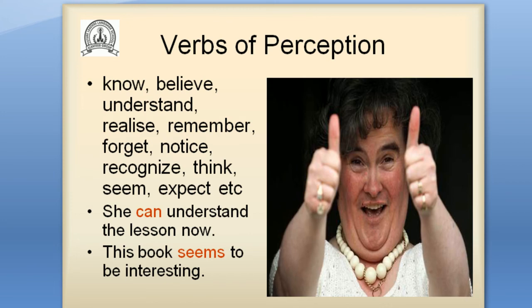Type 3: verbs of perception — know, believe, understand, realize, remember, forget, notice, recognize, think, seem, expect, etc. For example: she can understand the lesson now. This book seems to be interesting.